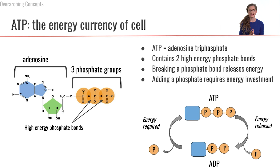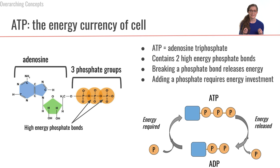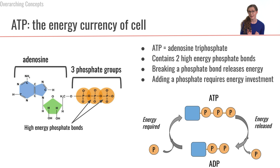Macronutrients are not in a currency that our cells can use. The currency that our cells use is called ATP, which stands for adenosine triphosphate. Let's take a look at the components that make up ATP.